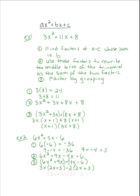Now the problem looks the way we need it to look — we have 2x plus 3 in both sets of parentheses. So I factor that out, and what is left on the outside is 3x minus 2. The factored answer is (2x plus 3)(3x minus 2), and the problem has been factored.